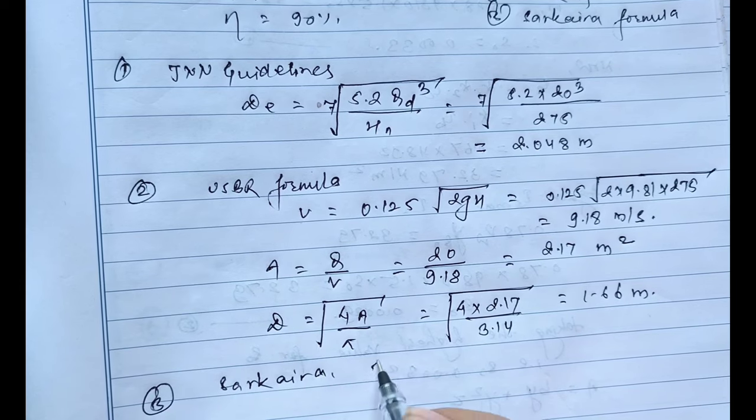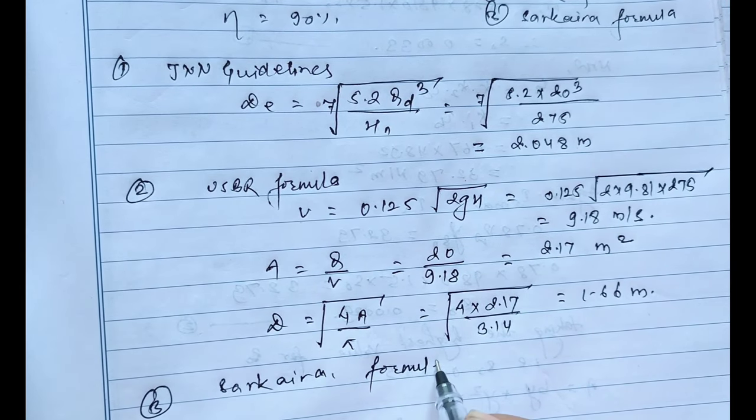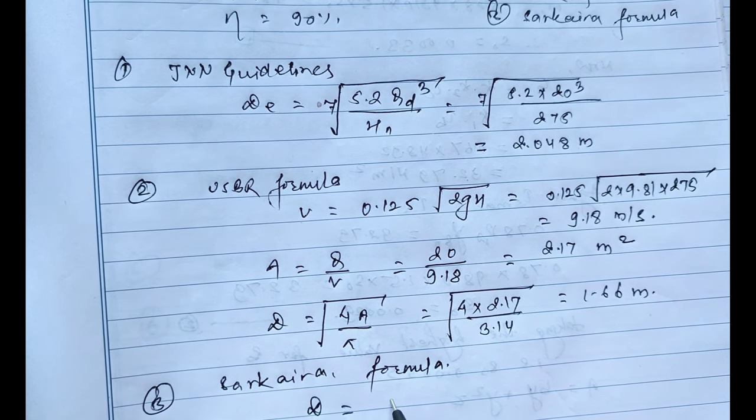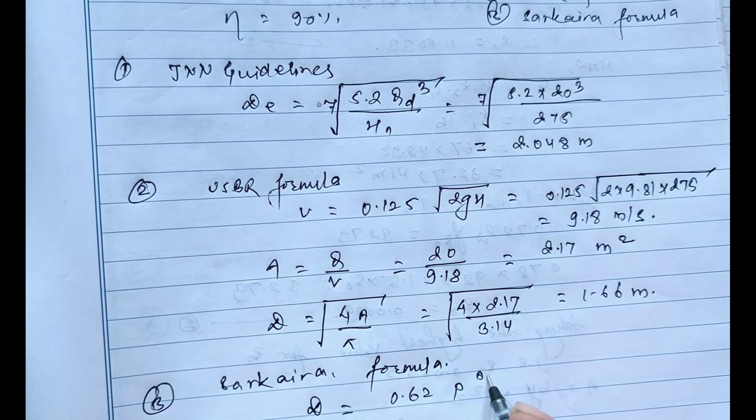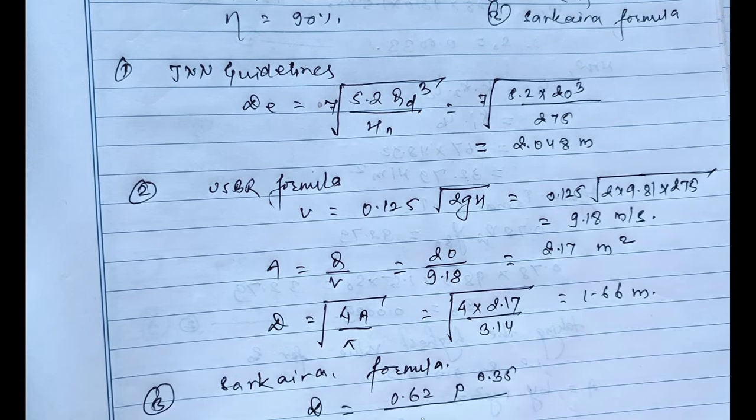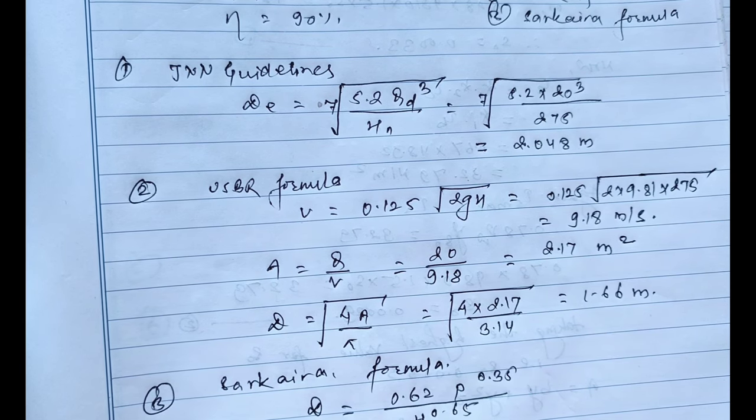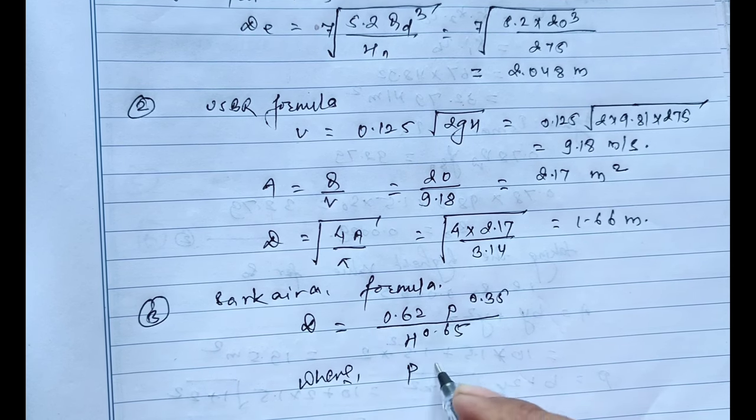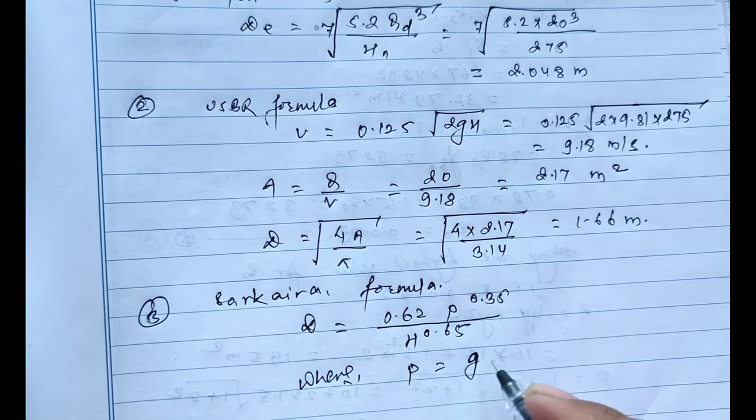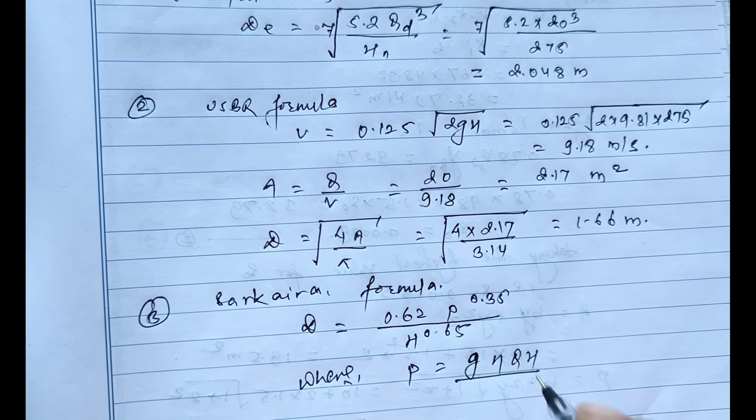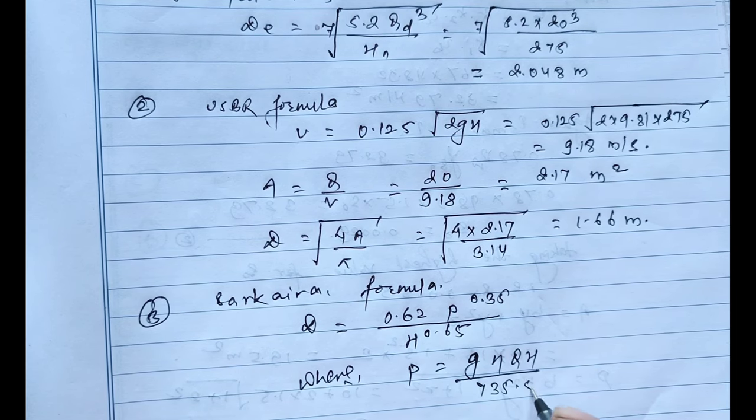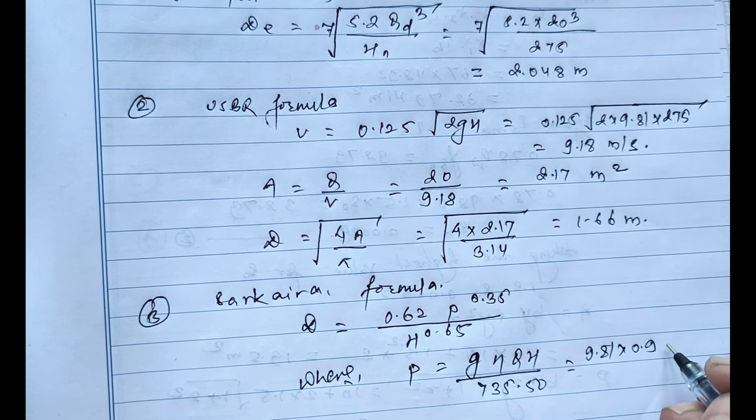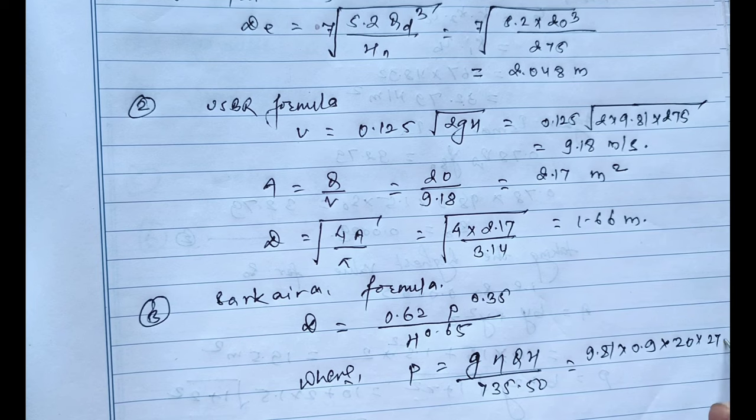On this, the formula used is D equals 0.62 times P to the power 0.35 divided by H to the power 0.65, where P equals rho times g times efficiency times Q times H divided by 735.50. On placing the value, 1 into 0.9 into 20 into 275 divided by 735.55.